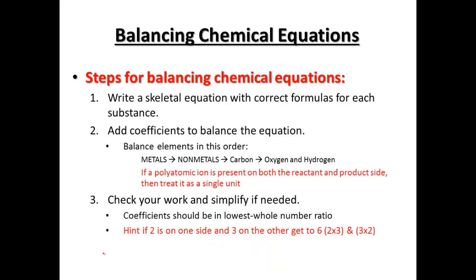Steps for balancing chemical equations: first, write the skeletal equation with correct formulas for each substance. Then add coefficients to balance — balancing metals first, then non-metals, then carbon, oxygen, hydrogen. If a polyatomic ion is present on both sides of the reaction, treat it as a single unit. Hint: if two or three appear on both sides, try to get to six — that's the lowest common denominator between them.